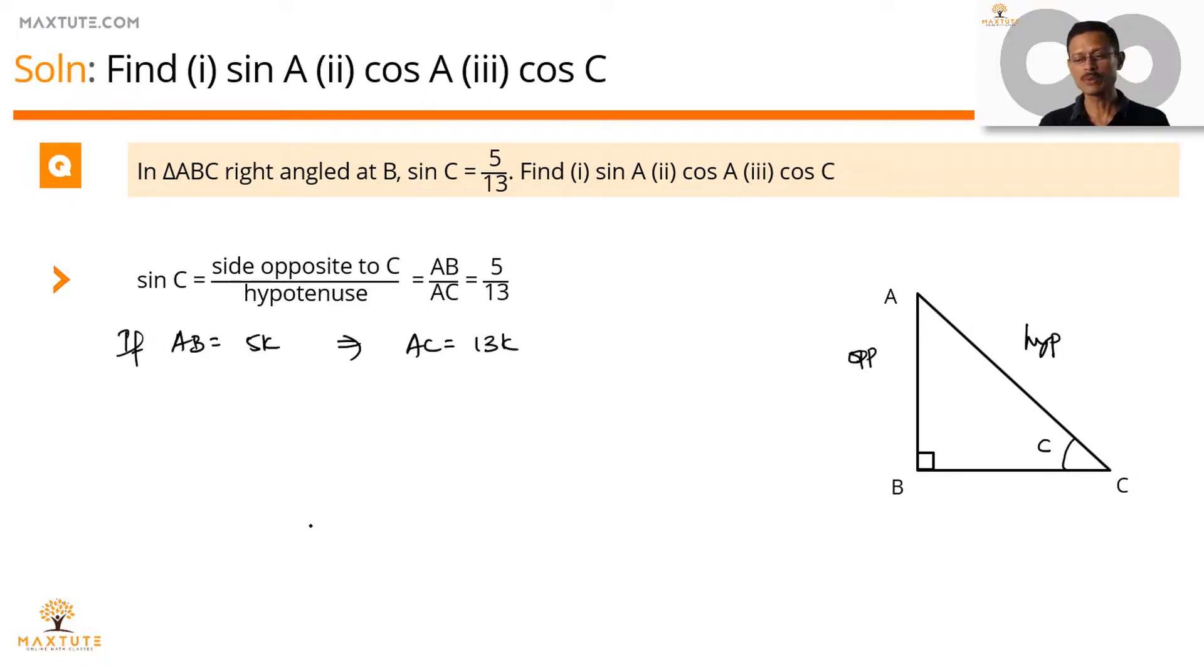Step 1. What are we going to do? Let's compute the value of the third side which is equal to BC. BC by using Pythagoras theorem is equal to hypotenuse square which is square of AC minus AB square. AC is equal to 13k. So 13k square minus square of AB which is equal to 5k square.